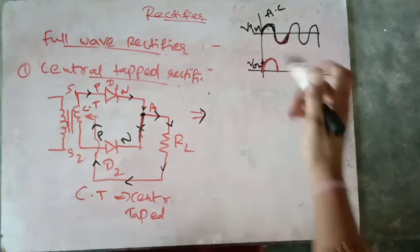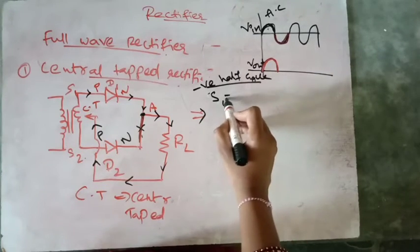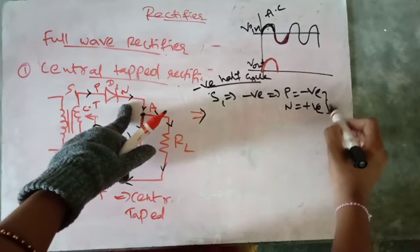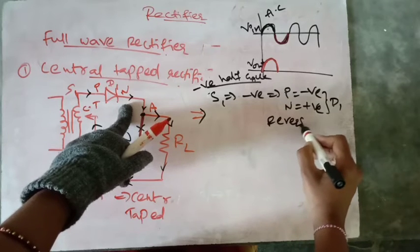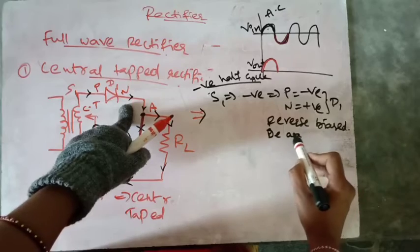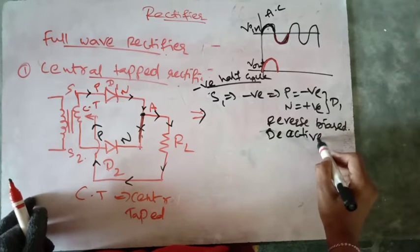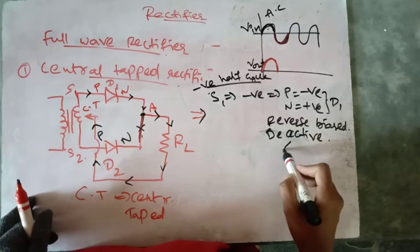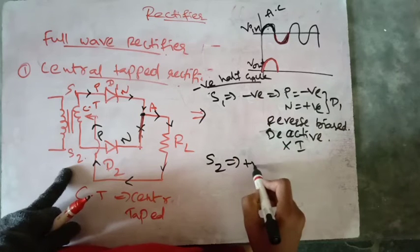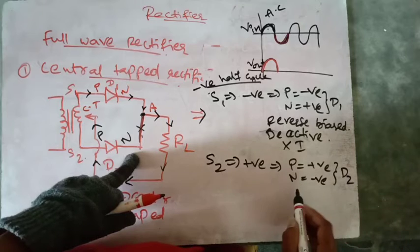For the negative half cycle, S1 will be negative, therefore P will be negative and N will be positive for diode D1, making diode D1 reverse biased — D1 will be inactive and there will be no current flow through it. For diode D2, S2 will be positive, so P will be positive and N will be negative, and therefore diode D2 will be forward biased.